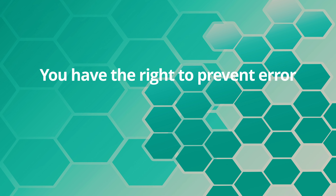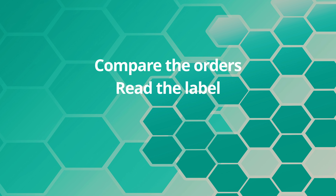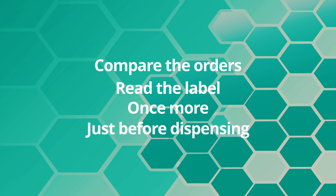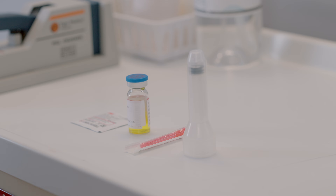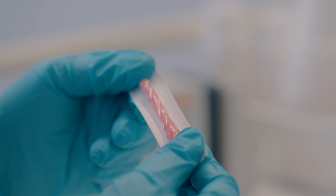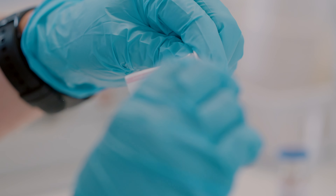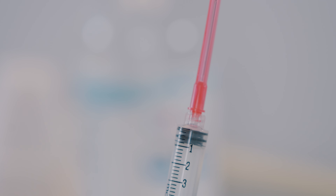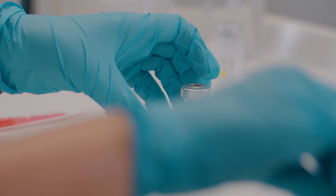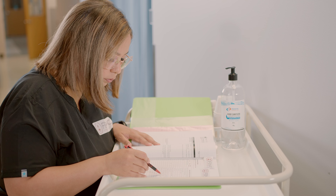Remember, you have the right to prevent errors — compare the order with the labels on the medication once more just before dispensing. A key point to remember is that you will be using blunt non-filtered needles to draw the medication from the vial. Once your medication is drawn, you will switch the needle before administering to the patient. Make sure that the strength on the label matches the order, and that you dispense the right dose by the right route at the right time.